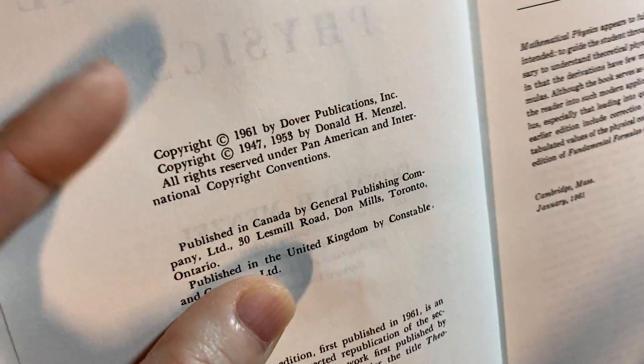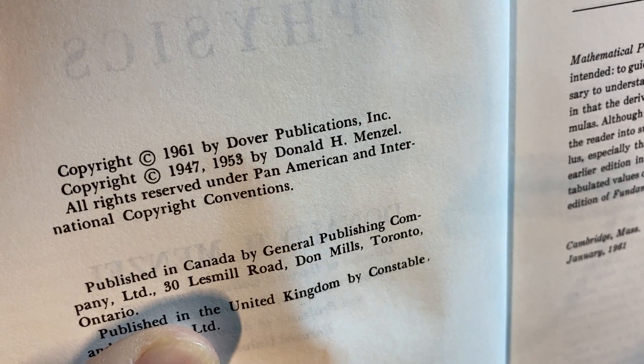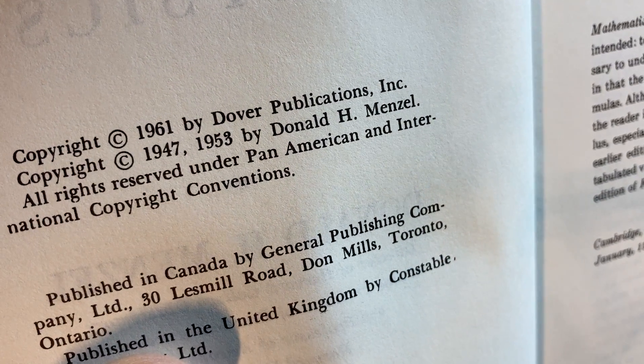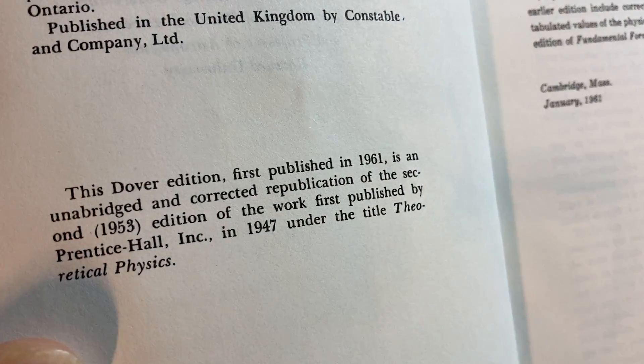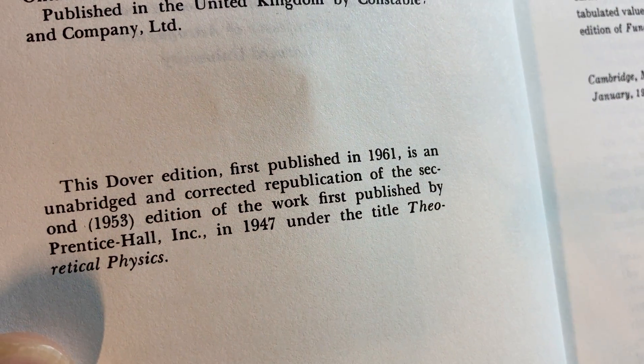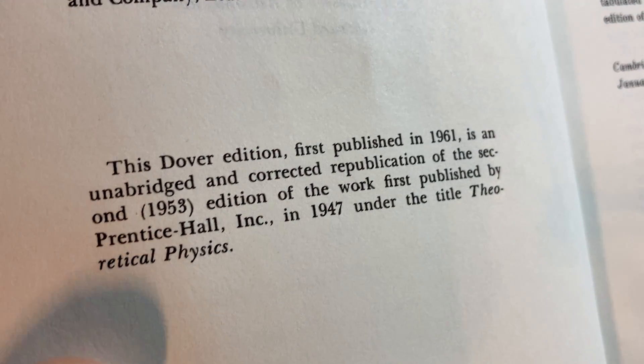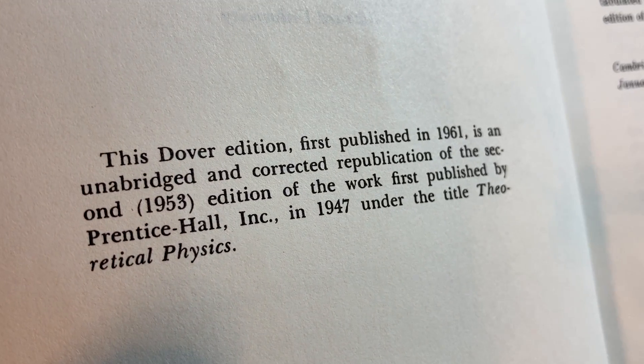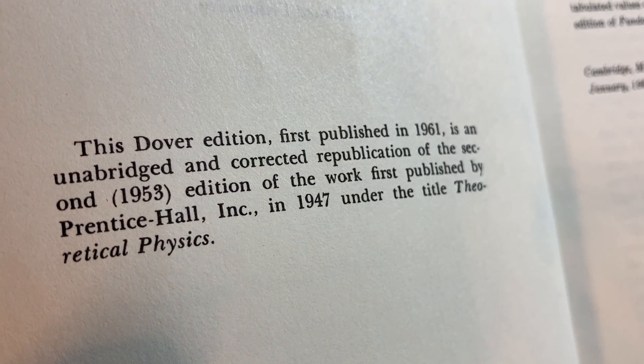See if we can find the copyrights. 1961 Dover. Wow. Okay, so even the Dover one is old. 1947, 1953 by Menzel. Wow. This Dover edition, first published in 1961, is an unabridged and corrected republication of the second 1953 edition of the work first published by Prentice Hall, Inc. in 1947 under the title Theoretical Physics.